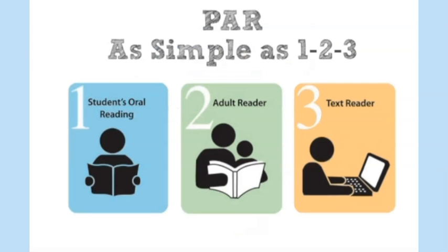Another useful tool is the Protocol for Accommodations in Reading (PAR), where you measure the student's oral reading, an adult reads to them, and then they hear the text read aloud with a text reader. The PAR provides reading samples from kindergarten through 12th grade with a series of comprehension questions and running records to measure reading speed, allowing a one-stop shop to compare how the student reads independently, with a human reader, and with text-to-speech. This is very useful because sometimes you'll find students reading with near 100% accuracy but their reading fluency is so slow that's the identified barrier, or you might find specific vocabulary weaknesses or difficulties with inference and main ideas.